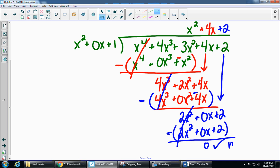So I have no remainder, as I said at the beginning of this video. So my answer, or my quotient, is x squared plus 4x plus 2.